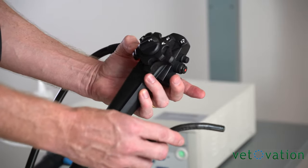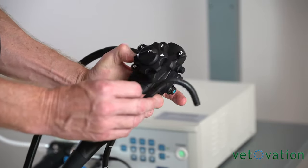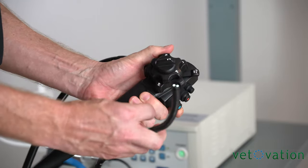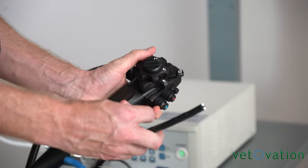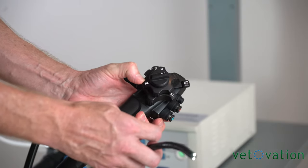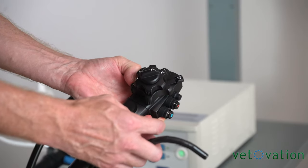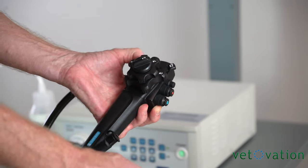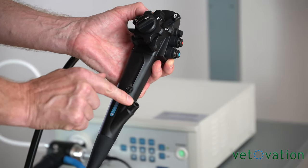The large dial controls retroflexion of your scope back and forth and then the smaller dial turns your scope right and left. The knob at the front will lock your scope in place for the small dial. The knob in the back will lock your scope in place for the back dial. Instruments can be introduced down the working channel.